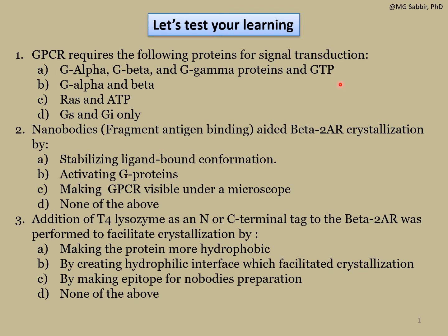Option B: G alpha and beta. Option C: Ras and GTP. Option D: Gs and Gi only. Option D is not correct because G stimulatory and G inhibitory proteins are tissue-specifically recruited to GPCR and both proteins are not simultaneously recruited — only Gs or Gi can be recruited.